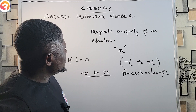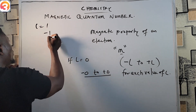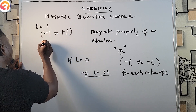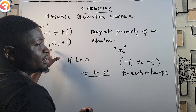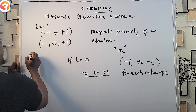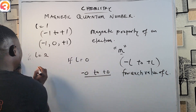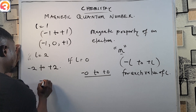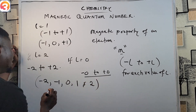Now if l is one, you have a range of minus one to plus one. That means m will have more than one value: minus one, then zero, then plus one — so m will have three values when l equals one. Now if l is two, the range goes from minus two to plus two, giving values of minus two, minus one, zero, one, and two — so those are the values of m when l is two.